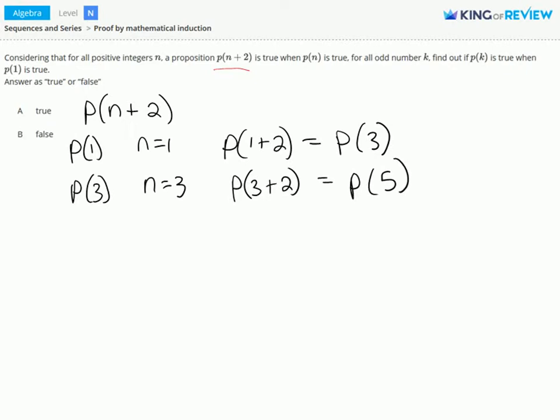This is equal to p of 5. Therefore, when p of 1 is true, for odd numbers k, p of k is true. So letter A is correct.